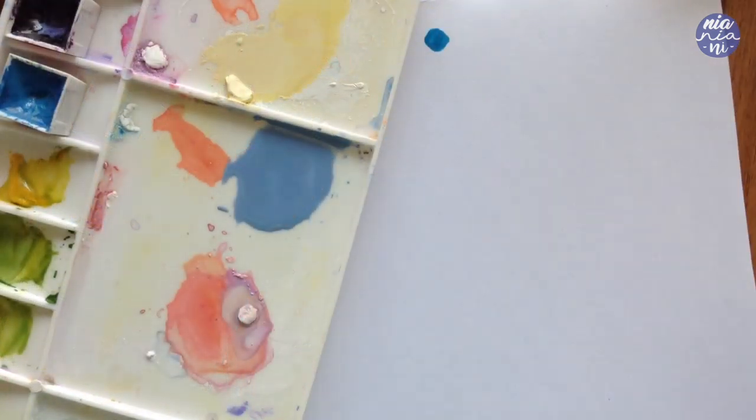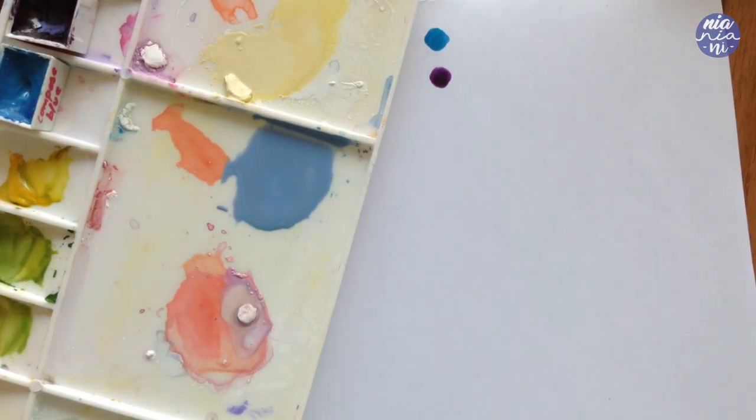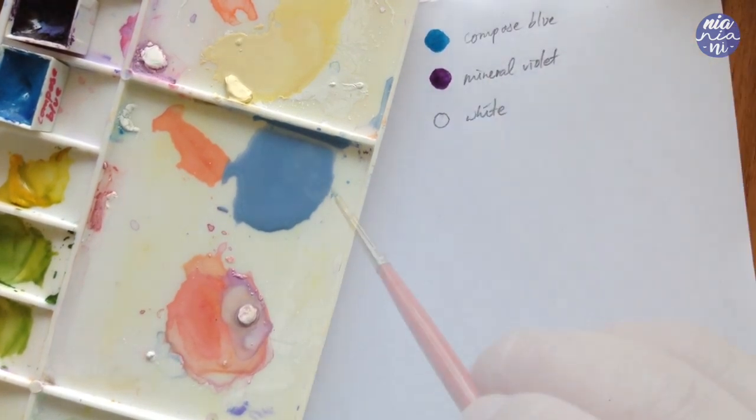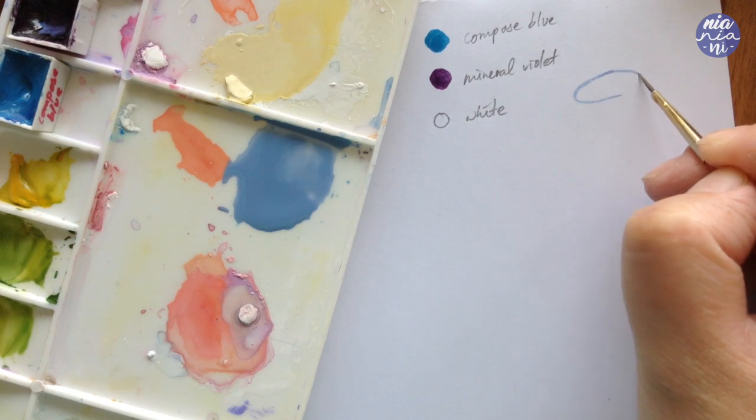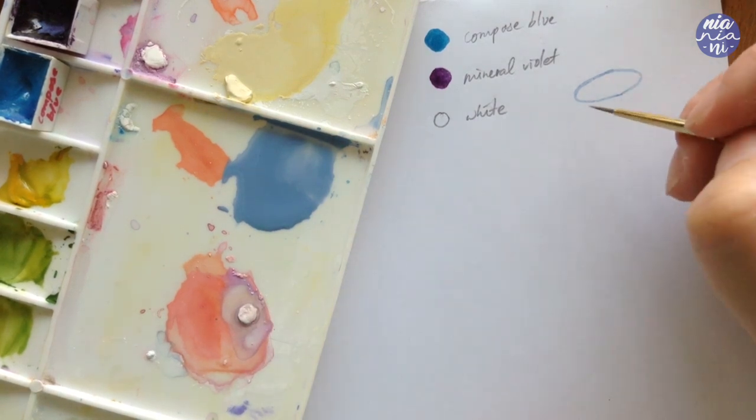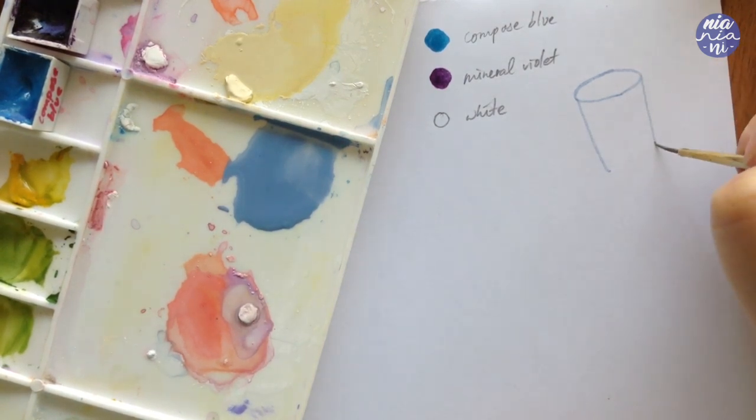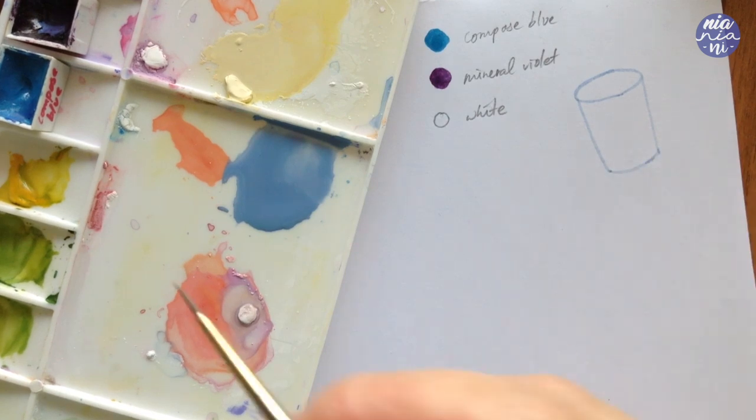For the cup, I'm just going to paint an outline and this can literally be any color. It can be purple, pink, or gray would also be nice. But for this painting personally, I want to go for a slightly grayish blue.